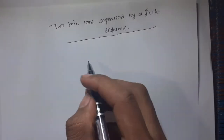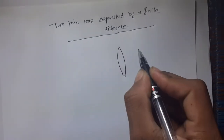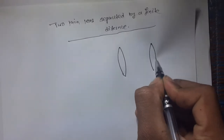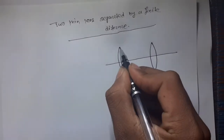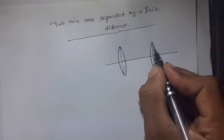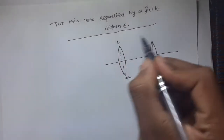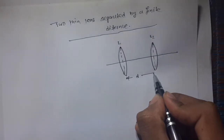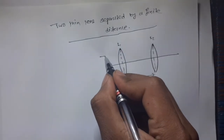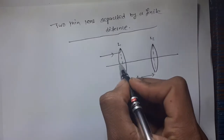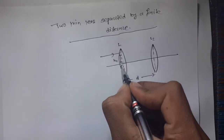Two thin lenses separated by a finite distance. This is the principal axis and the distance between L1 and L2 is D. Now monochromatic light is incident at L1 above the h1 distance from the axis.